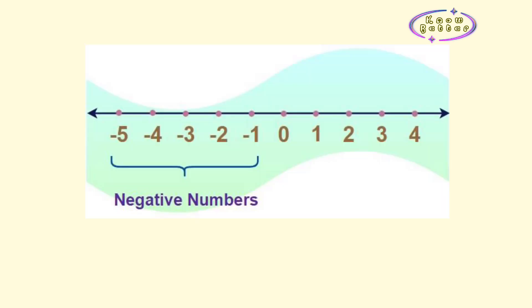First of all, all these counting numbers like 1, 2, 3, 4 and goes till infinity, and the negative numbers of it like minus 1, minus 2, minus 3, minus 4 and it goes till infinity again, including the number 0, they together are called integers.